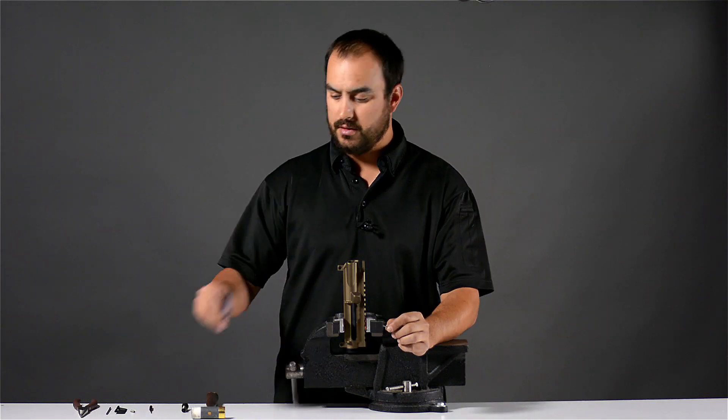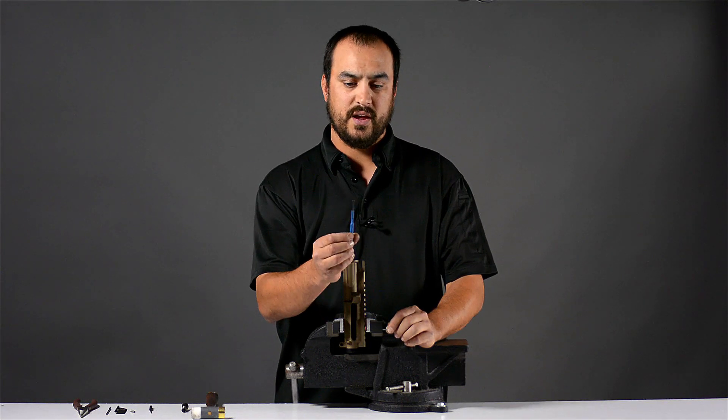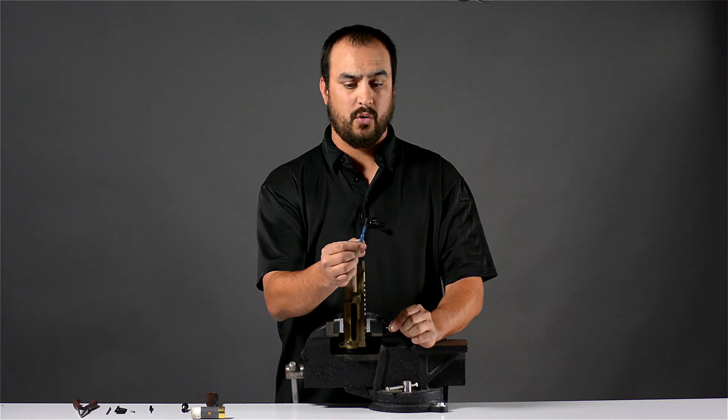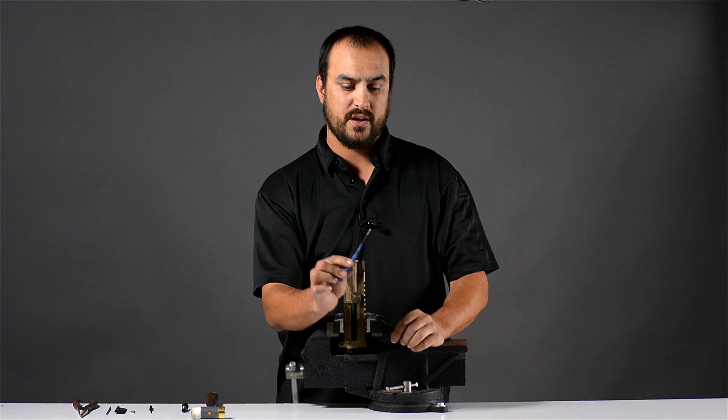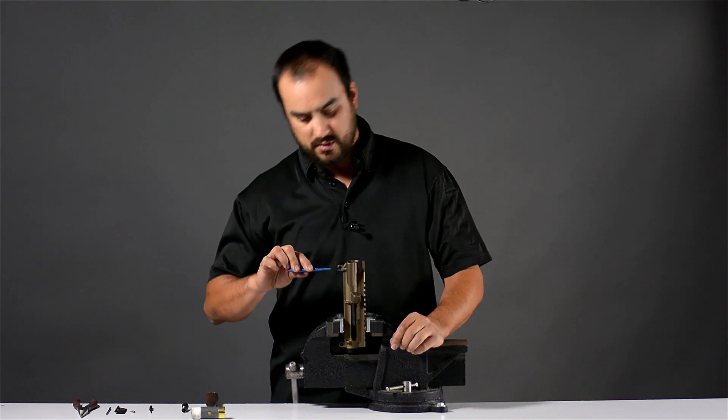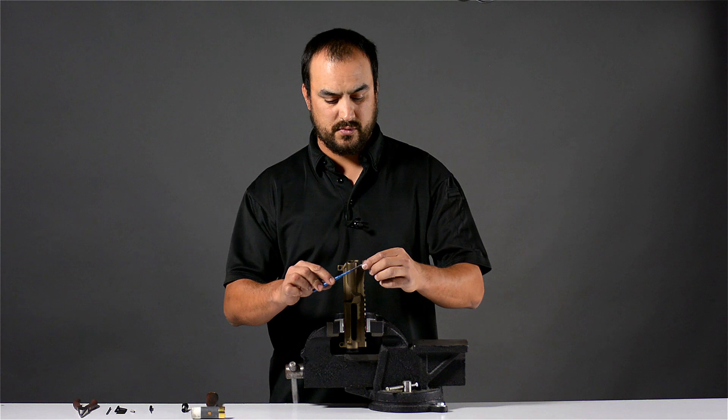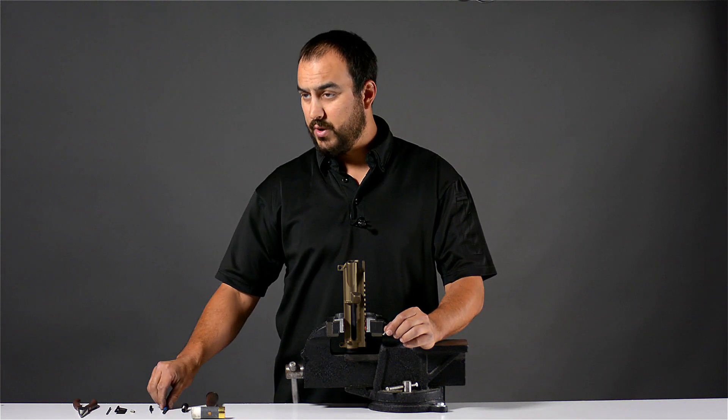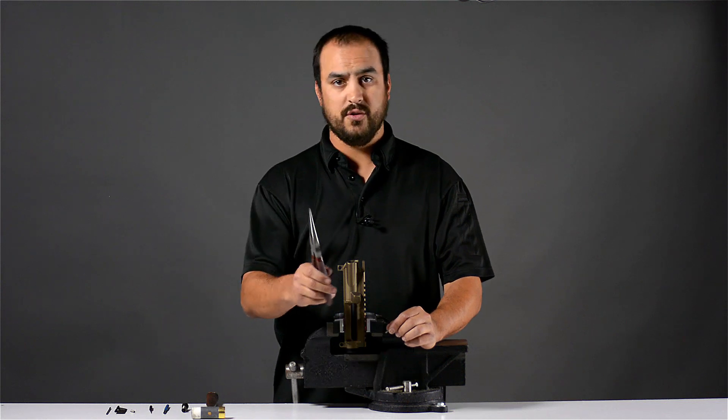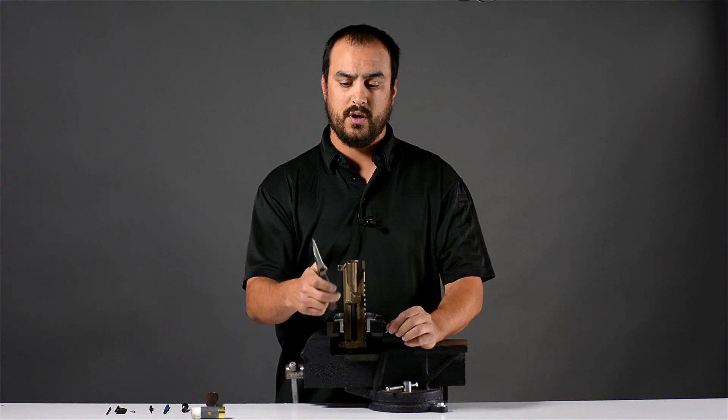At JP, we actually use a starter punch. It has a hole drilled into the middle that helps center and guide the roll pin into the hole. Some of you guys may not have this roll punch, so we are going to use needle nose pliers to help you get started.